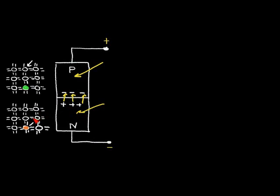If light hits the n-region and dislodges an electron from the lattice, producing an electron-hole pair, some of these holes can wander into the electric field region and be propelled toward the p-side. So holes are pushed in one direction and electrons in the other, resulting in a current flow in our solar cell.